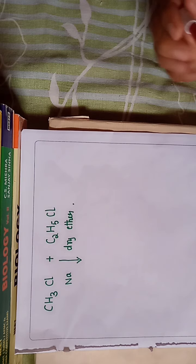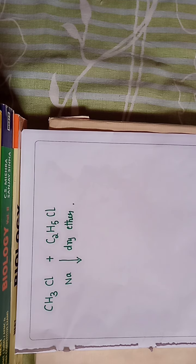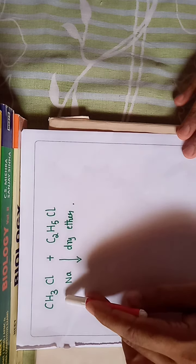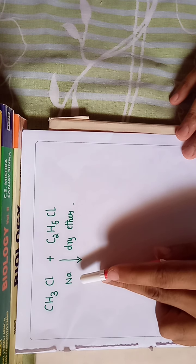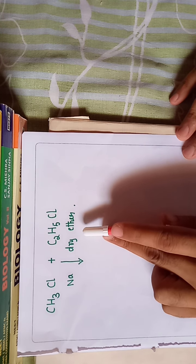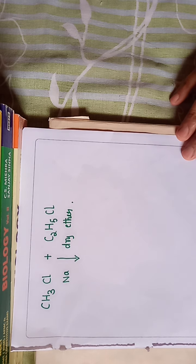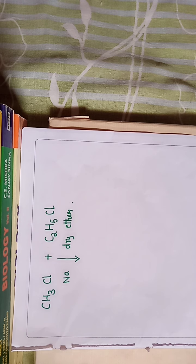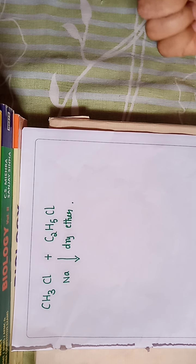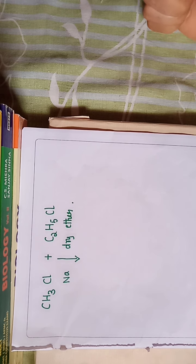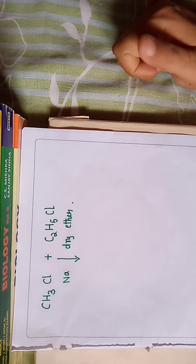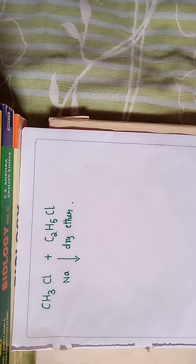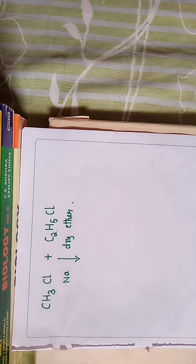Now, similar to the Wurtz reaction, consider the reaction between methyl chloride and ethyl chloride in the presence of sodium and dry ether. Since sodium and dry ether are present, this is going to follow the Wurtz reaction. The key point here is that both alkyl halides are different — one is methyl chloride and the other is ethyl chloride.